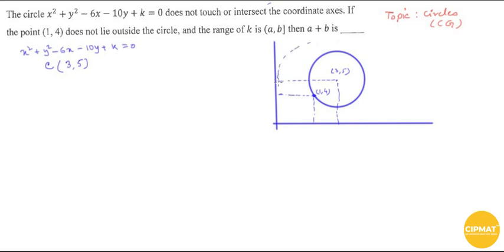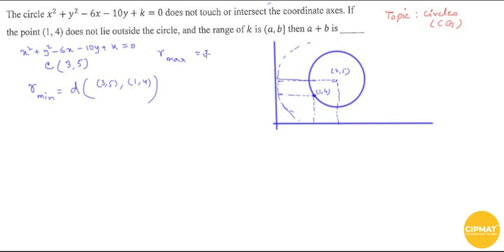The maximum size is that the circle can pass through the point (1, 4). So the minimum radius is the distance between the center (3, 5) and the point (1, 4). Using the distance formula: r_min = √[(3-1)² + (5-4)²] = √[2² + 1²].